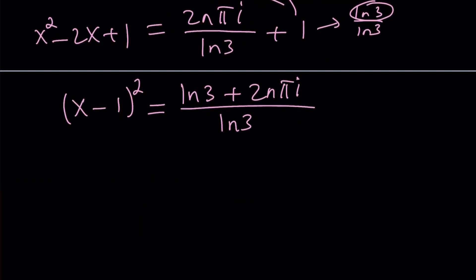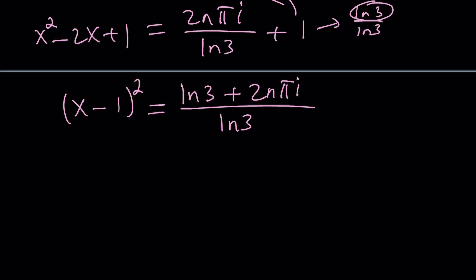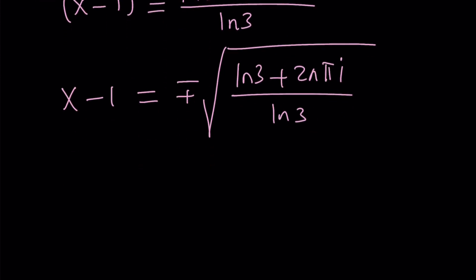Next step after completing the square would be to unsquare or square root. If you square root both sides, notice that you're going to end up with two values because there are two numbers whose square equals a certain number. Even if you had a real value, you would still do plus minus. Let's go back to our example and square root both sides using a plus minus sign. So x minus one is going to equal plus minus the square root of ln3 plus 2n pi i divided by ln3.